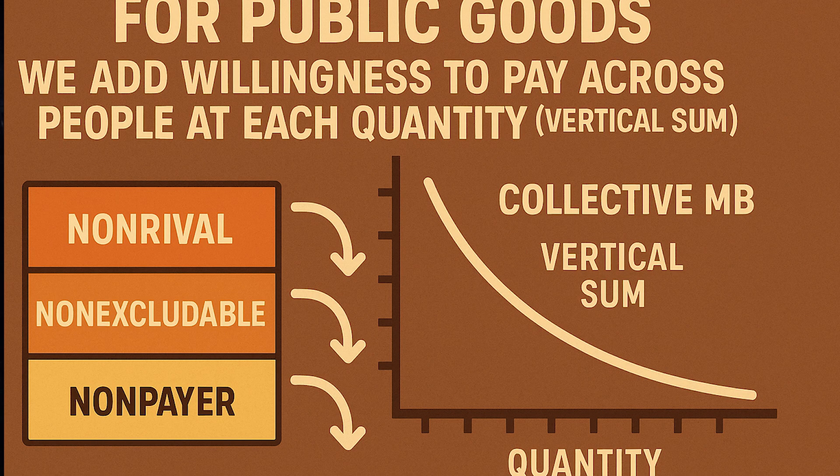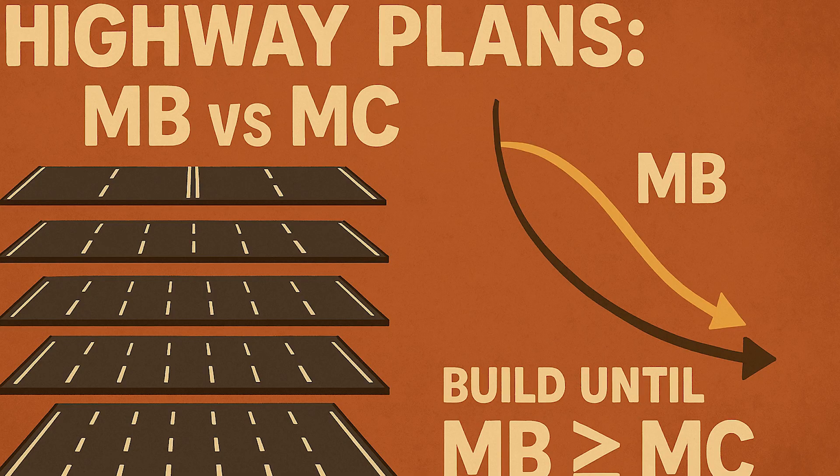The efficient quantity is where marginal benefit equals marginal cost — the point where the last unit funded is worth exactly what it costs. Imagine highway plans ranging from a modest widening to a massive six-lane build. Each step has a marginal cost and delivers a marginal benefit: fund the plans where marginal benefit exceeds marginal cost, and stop when marginal benefit falls below marginal cost. That avoids both under-building and over-building.